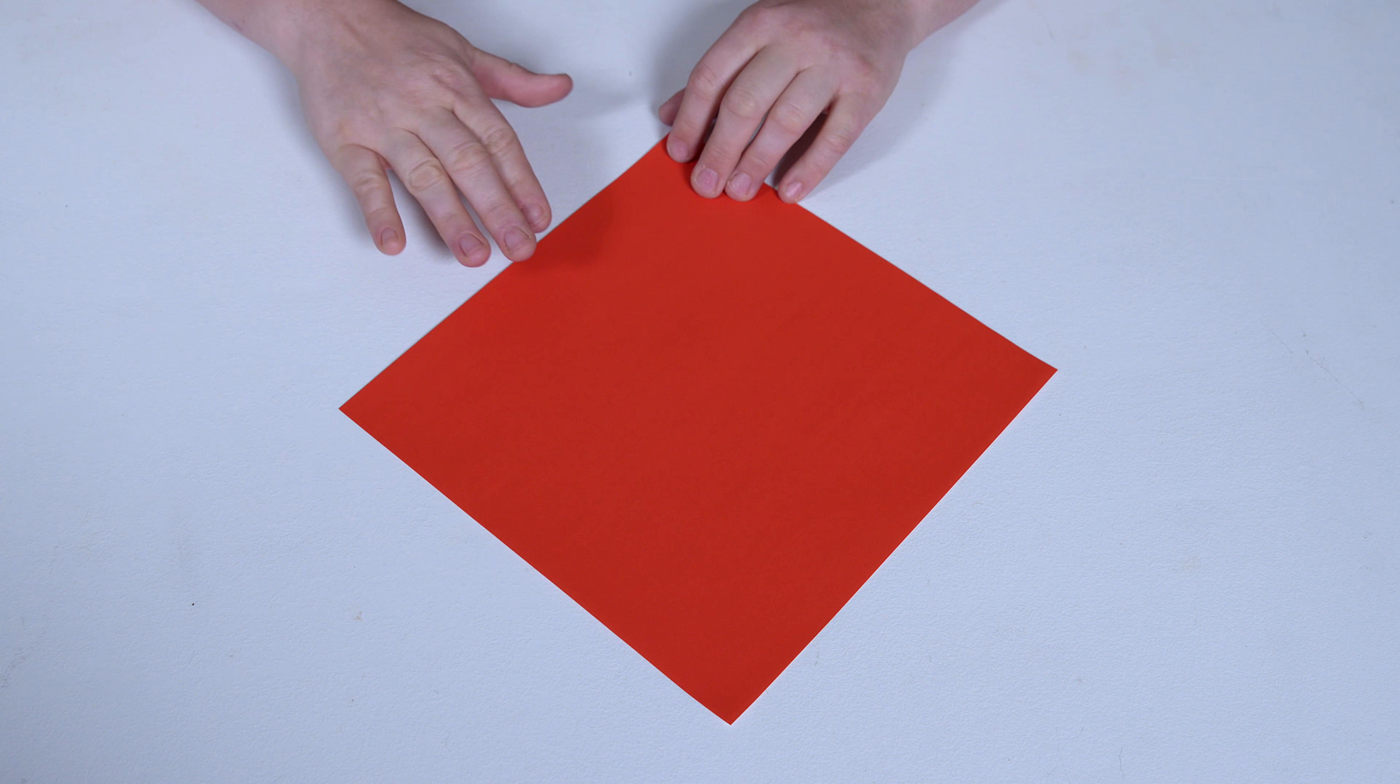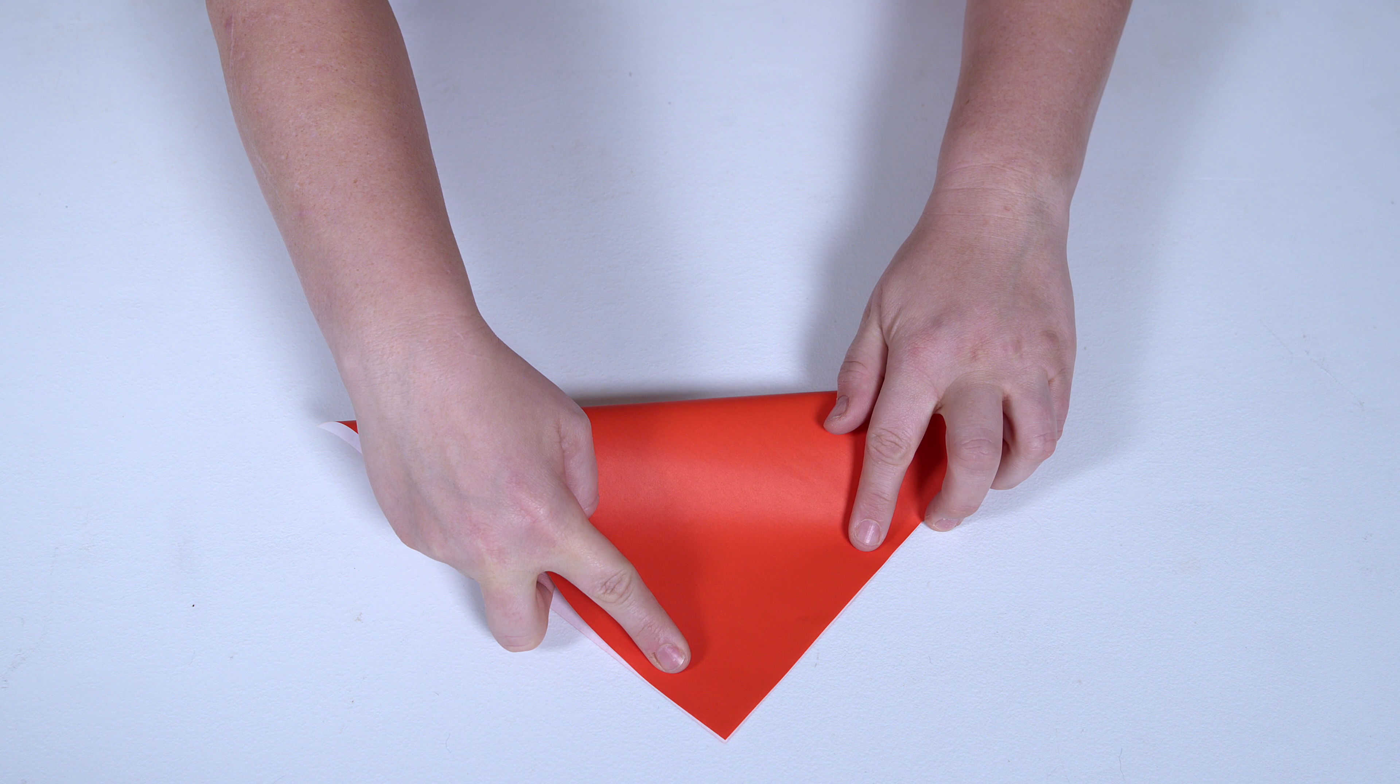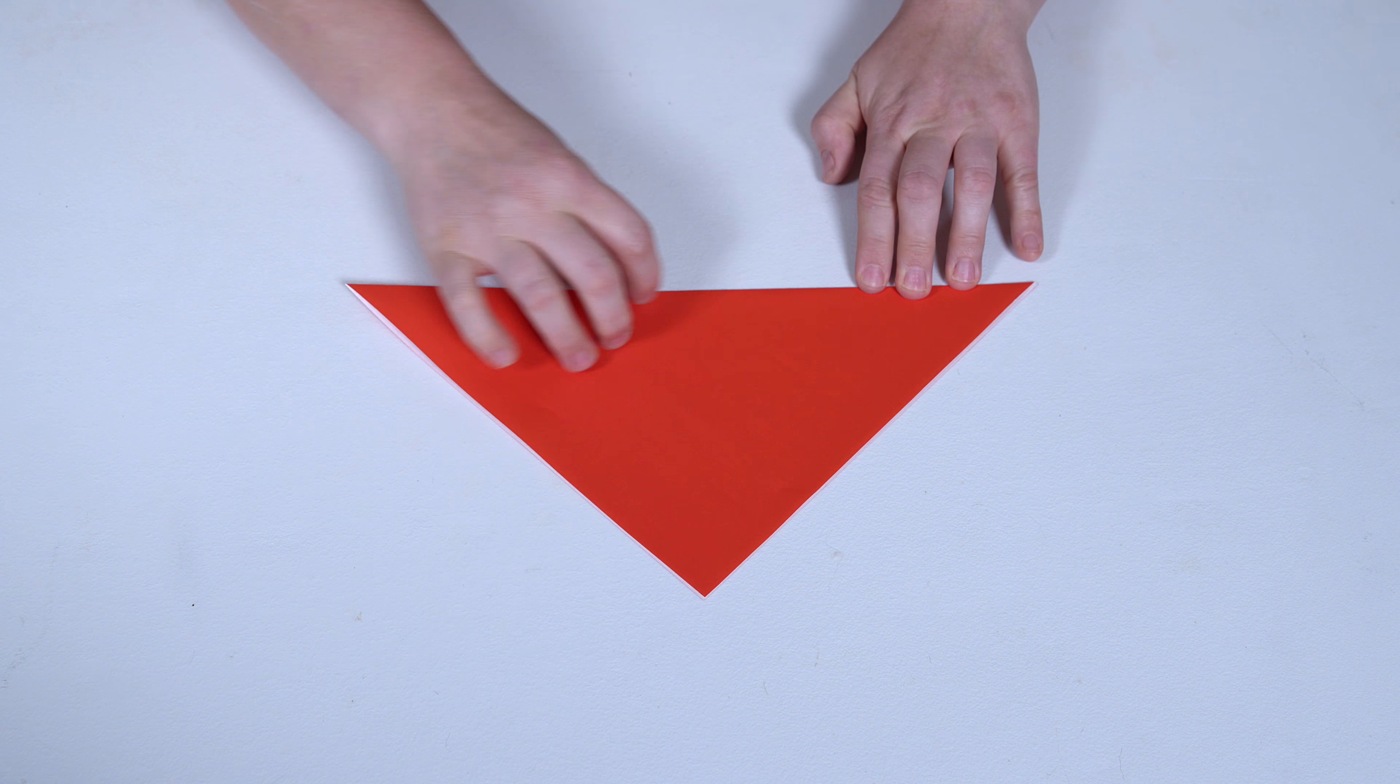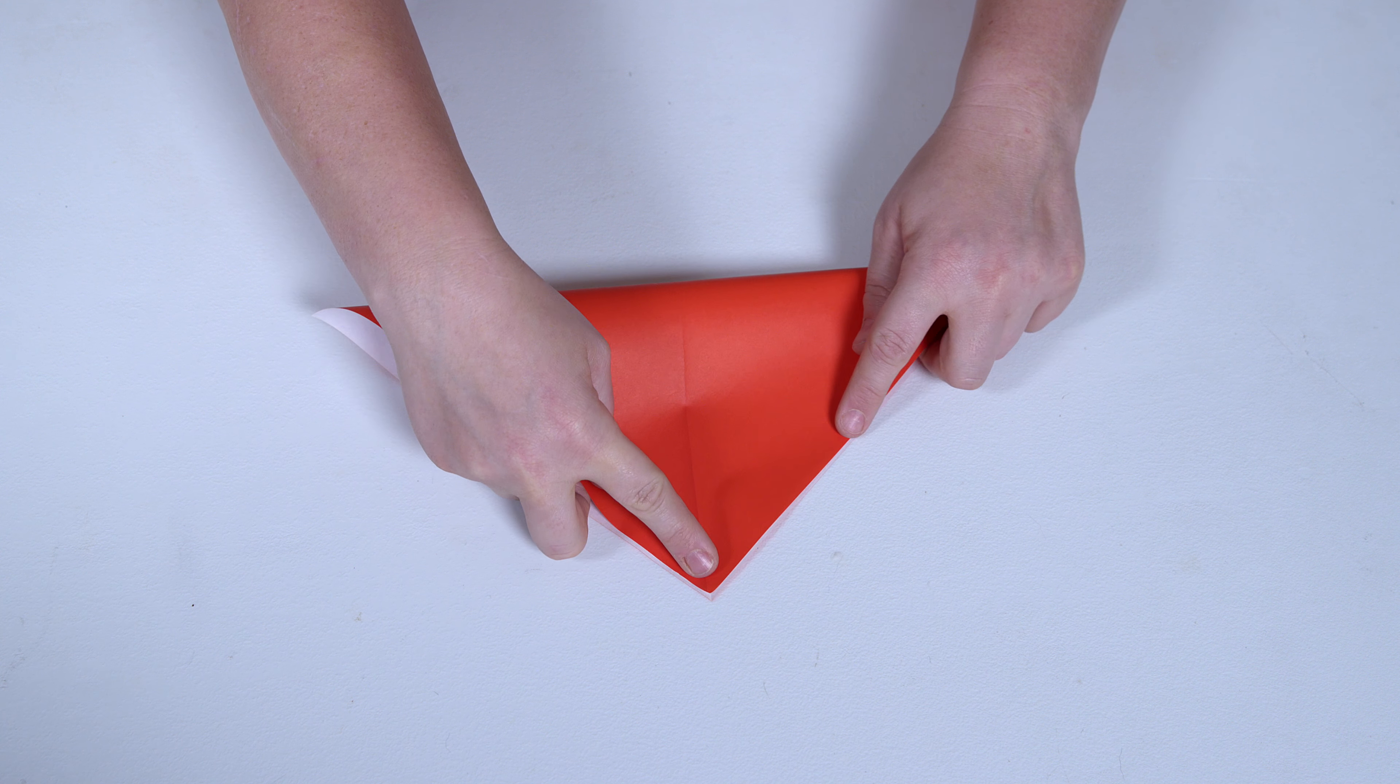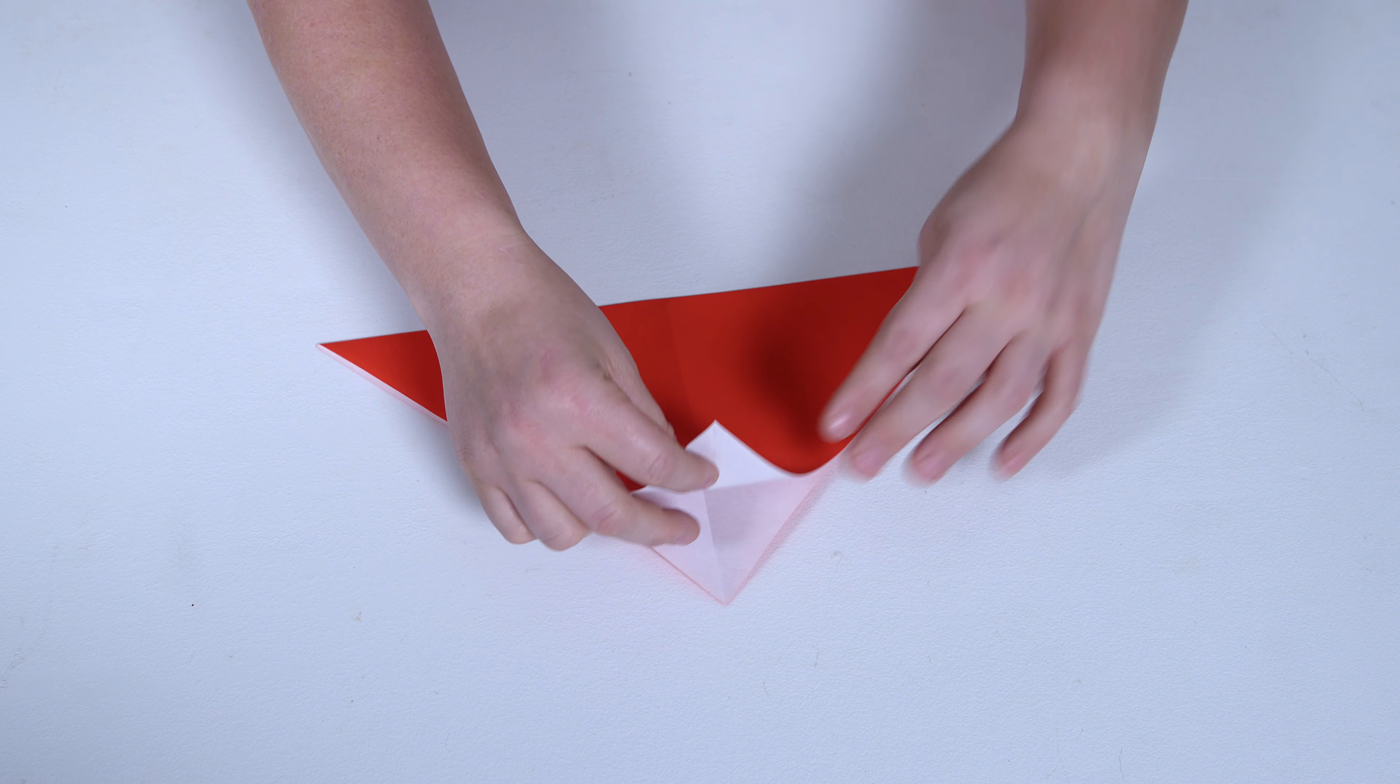So as you can see my square piece of paper, I want this color to be on the outside of the boat so I'm going to flip it over and the first thing we're going to do is make some pre-creases. So let's get corner to corner and make sure you get a nice good strong crease there. Open it up and do another crease on that corner. Try to get as exact as possible because these are going to be your foundation creases and then you open it up.